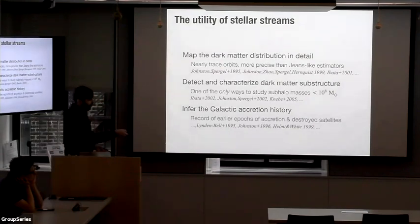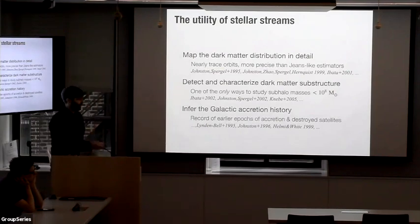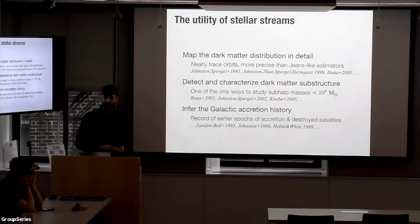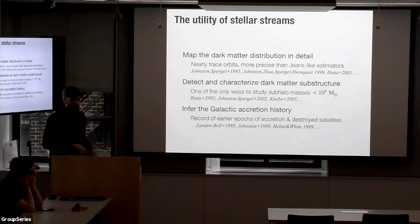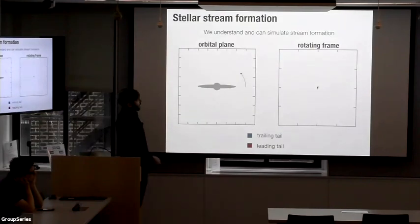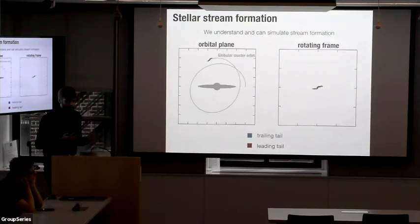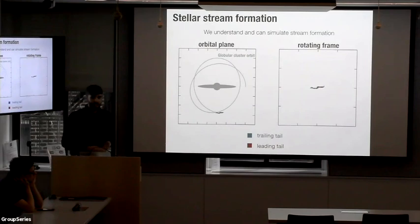If they're disrupted dwarf galaxies and globular clusters, they're literally a record of earlier epochs of accretion onto the Milky Way, so you can see how they connect to the merger history of our galaxy. One of the reasons they're so informative is that we think we understand the dynamics of how streams form really precisely.